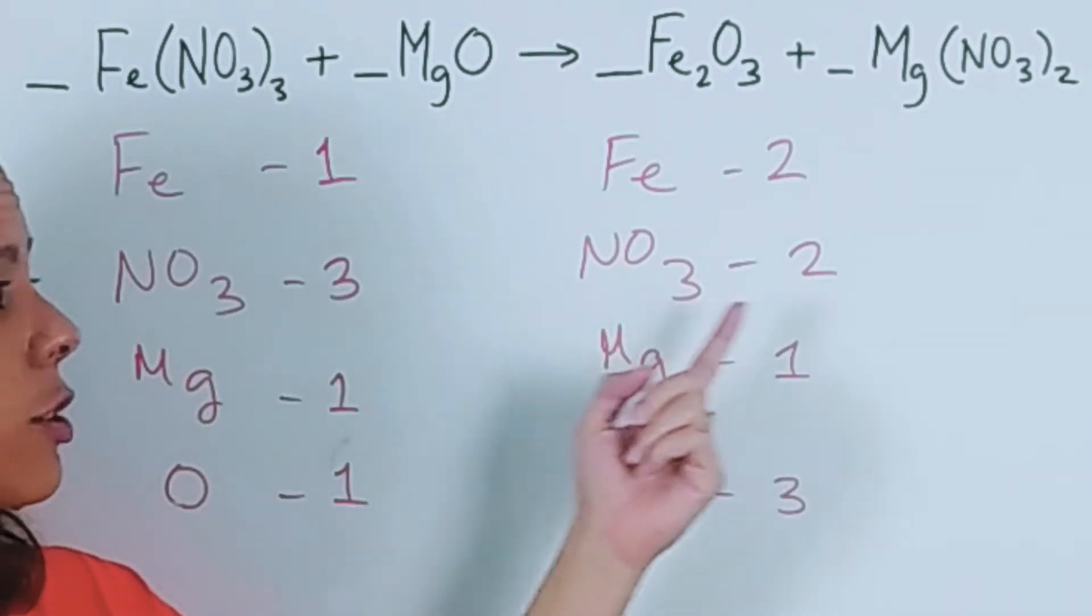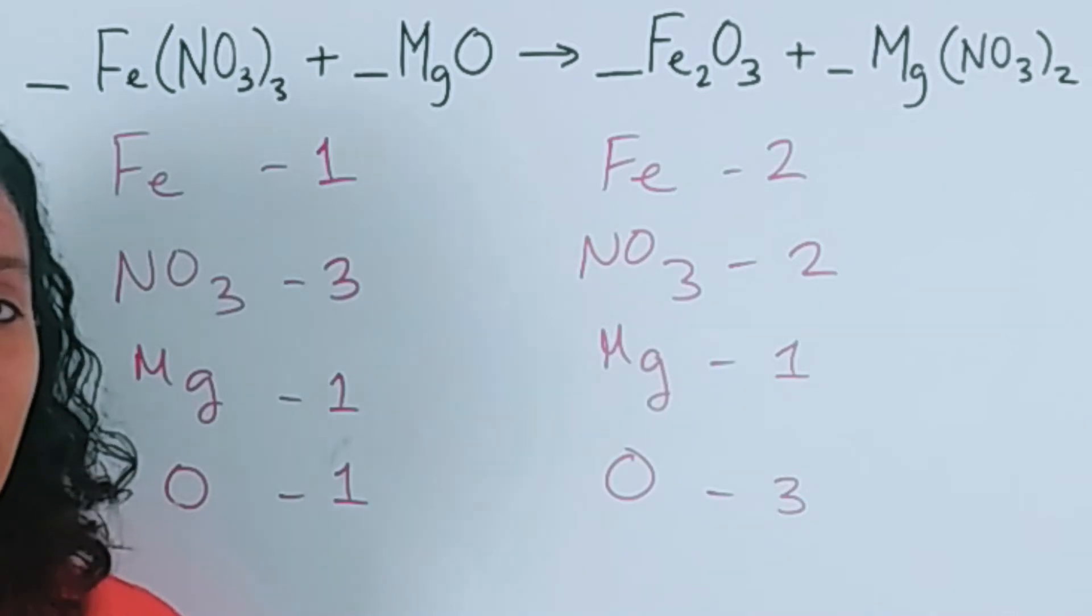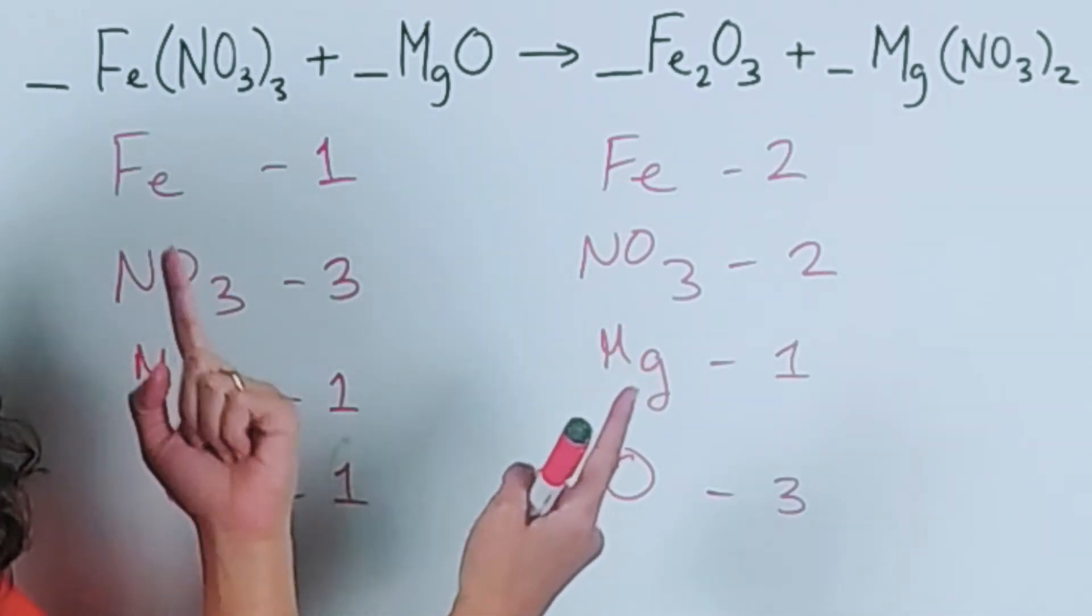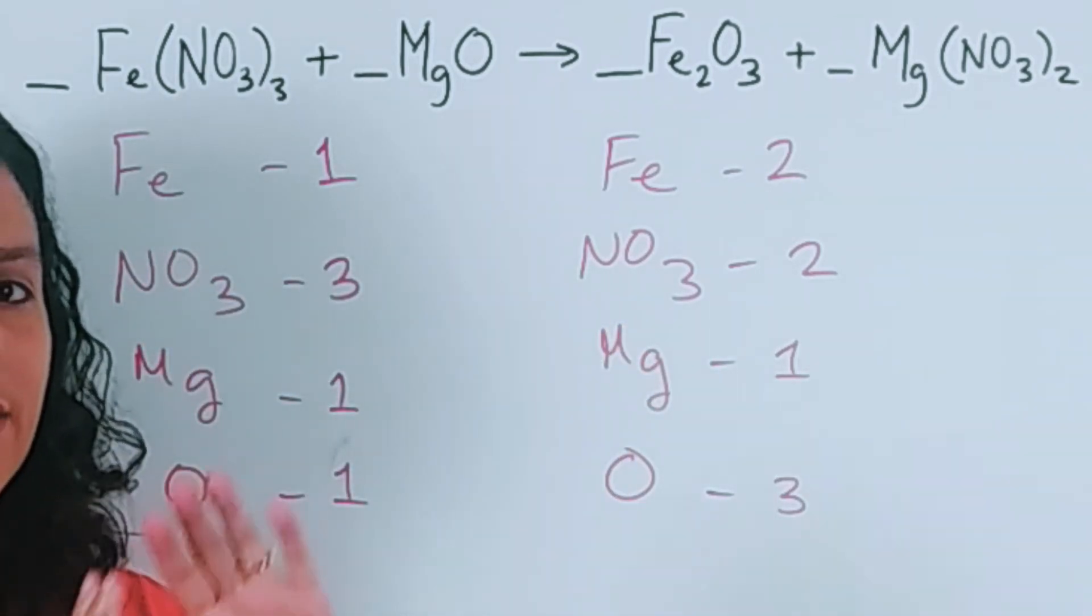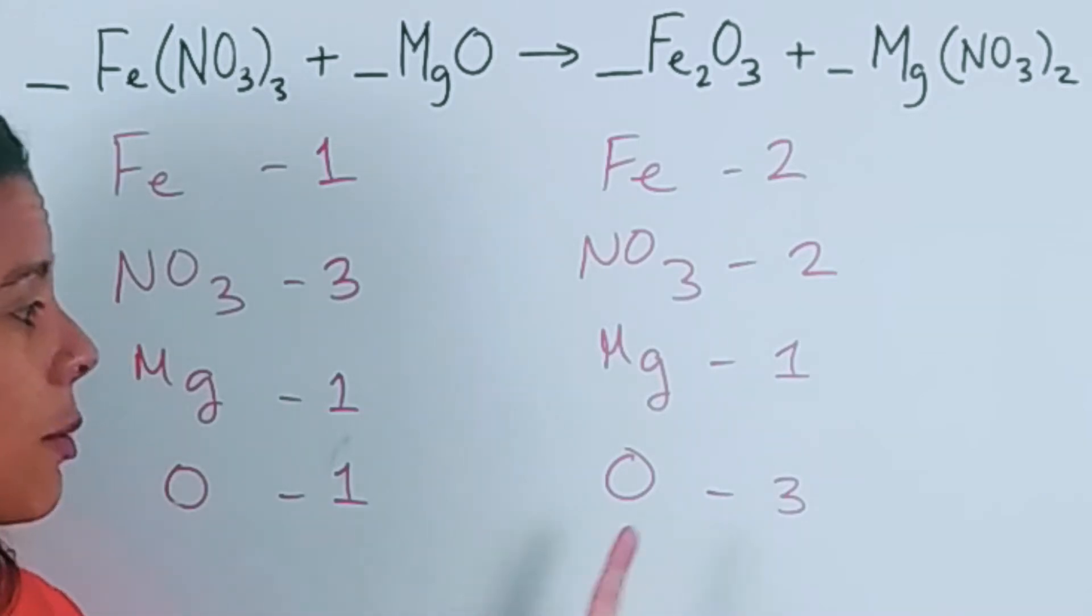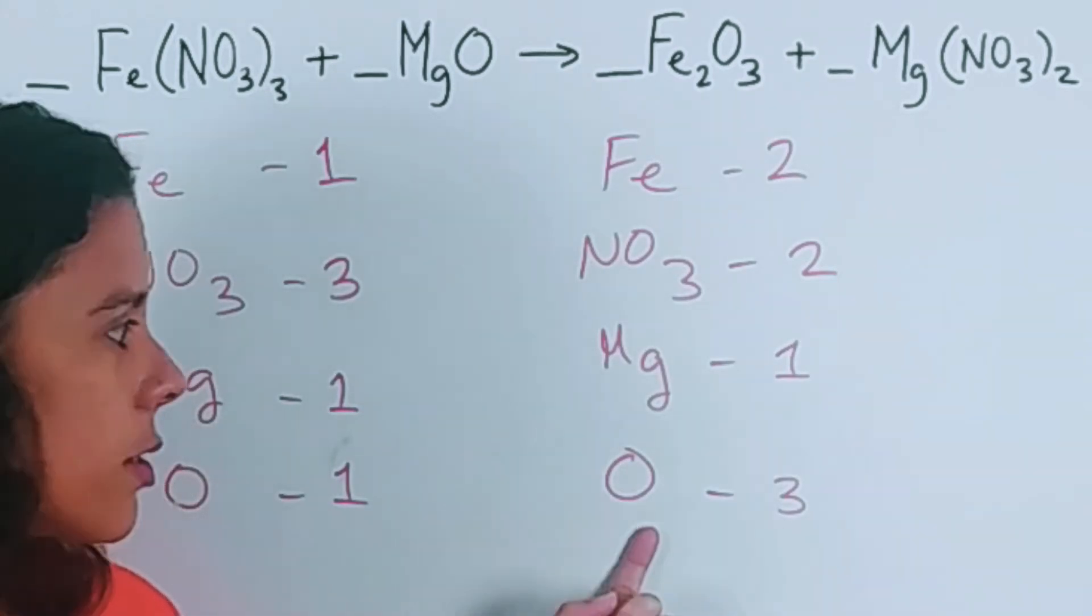And that would require me to write two different numbers at the same time. So I'm going to leave that one for next. I am going to do oxygen first. So I have three oxygens here and one oxygen here. So what I'm going to do is write a three